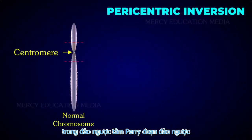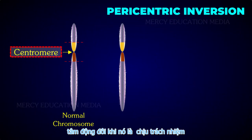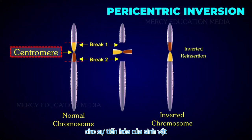In pericentric inversion, the inverted segment of the chromosome contains centromere. Sometimes, it is responsible for the evolution of the organism.